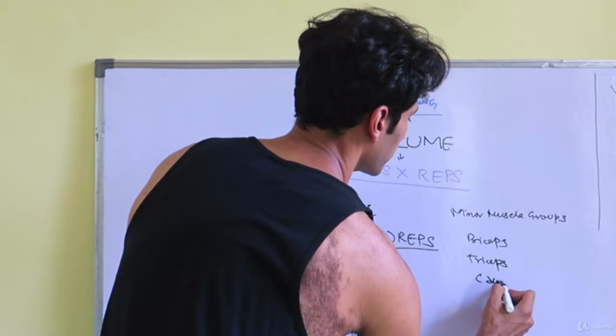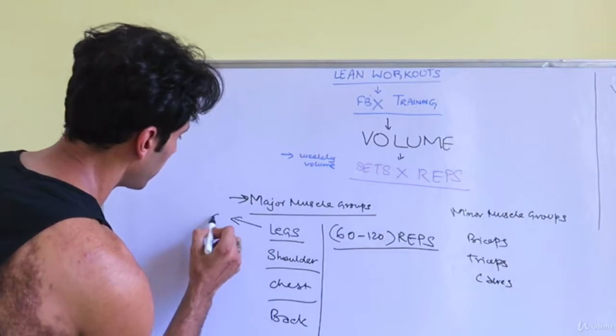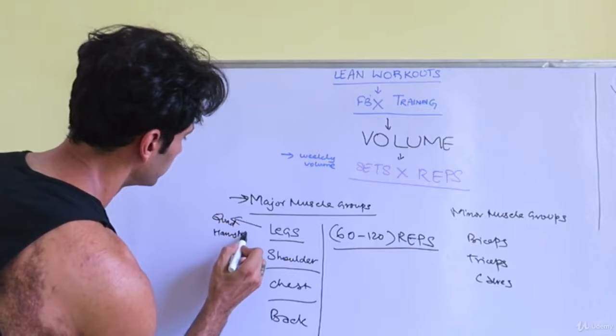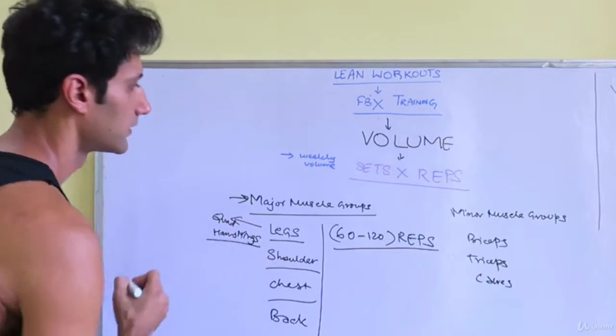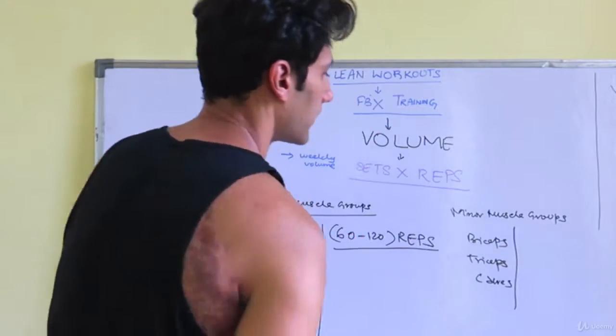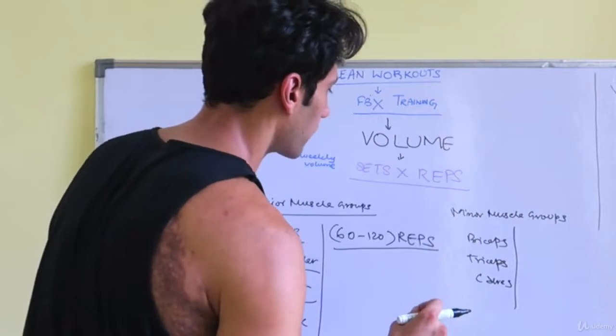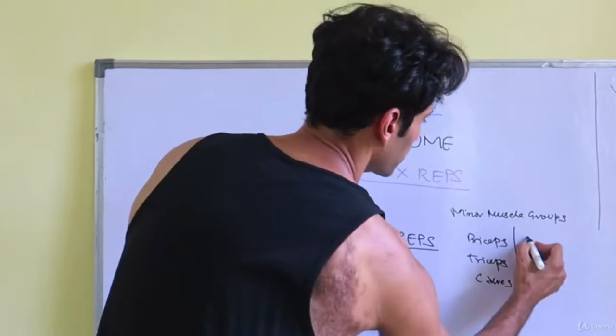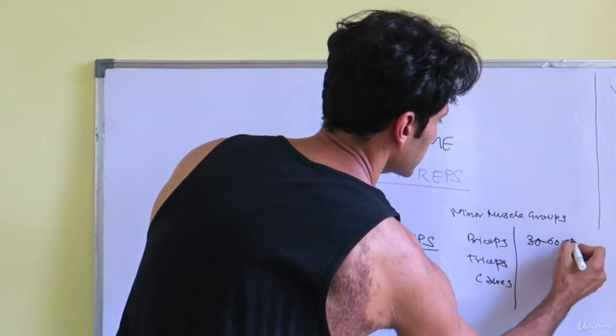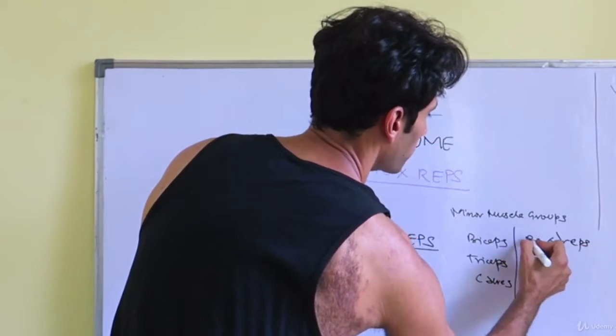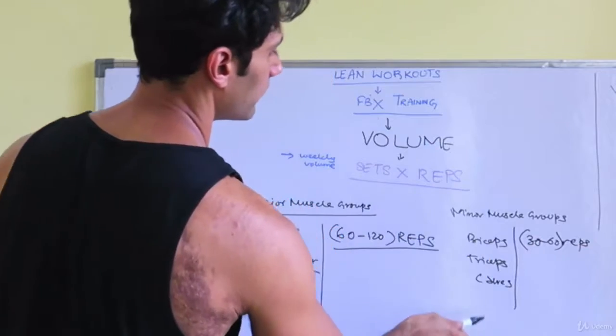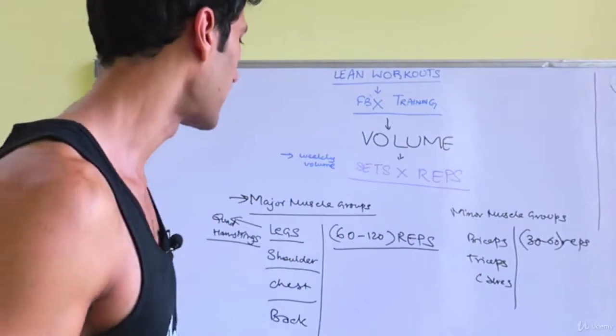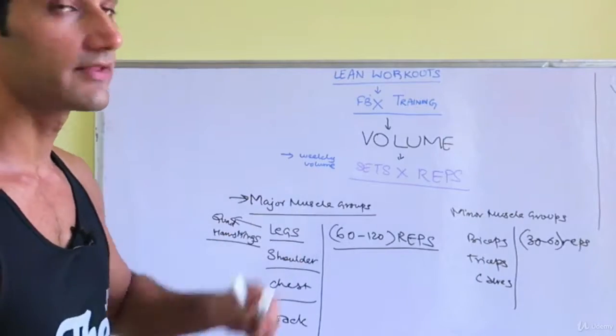By the way, legs will have your quads and hamstrings combined. Let's leave the abs for later, let's not include abs here. 30 to 60 repetitions is the optimal volume that one should target every week if you want to grow your arms or calves.